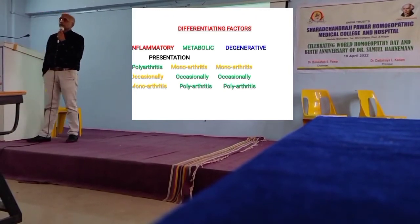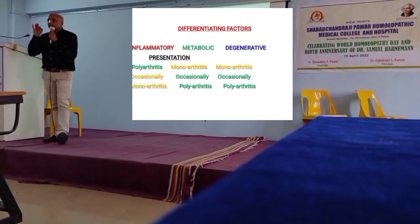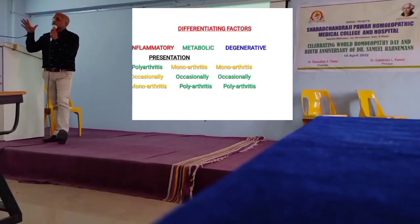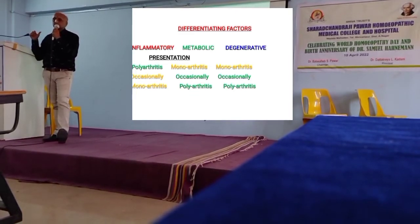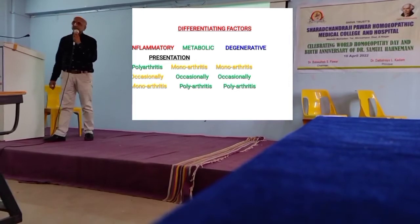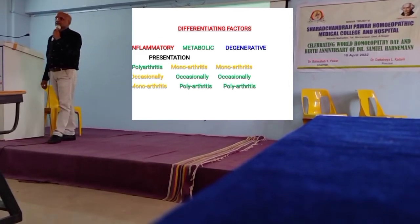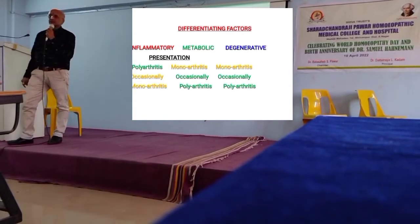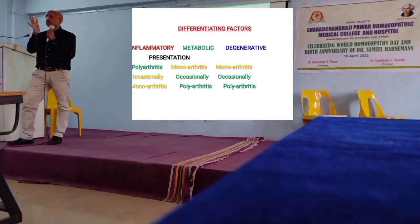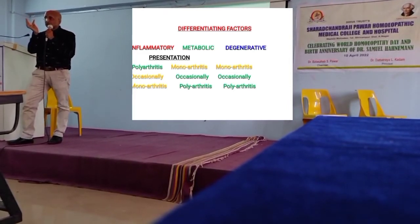Polyarthritis means multiple joints are affected. The presentation is bilaterally symmetrical - very commonly, the joints are bilaterally symmetrical. It starts from small joints and then progresses to large joints. The small joints of the hands are commonly affected. The joints affected in rheumatoid arthritis are the proximal metacarpophalangeal joint and the proximal interphalangeal joint. It is not the DIP joint which gets affected in rheumatoid arthritis.